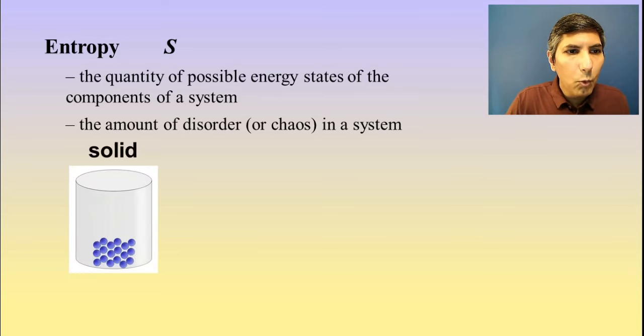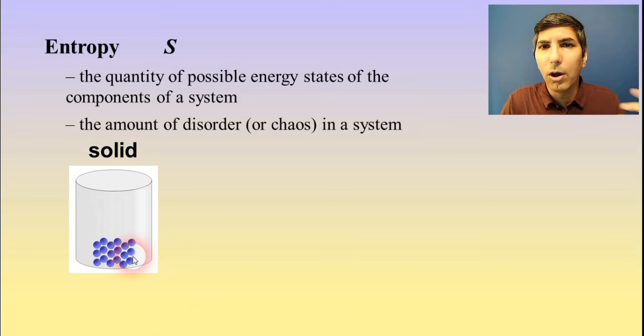Now what we're talking about when we say order or disorder is if you take a look at a solid. We've learned already in this course, way back in those earlier units, that in a solid, you have a very nice, orderly, often a very crystalline arrangement of molecules, very orderly. A solid has very little entropy. In fact, of all the states of matter, solid is going to have the lowest entropy of them all.